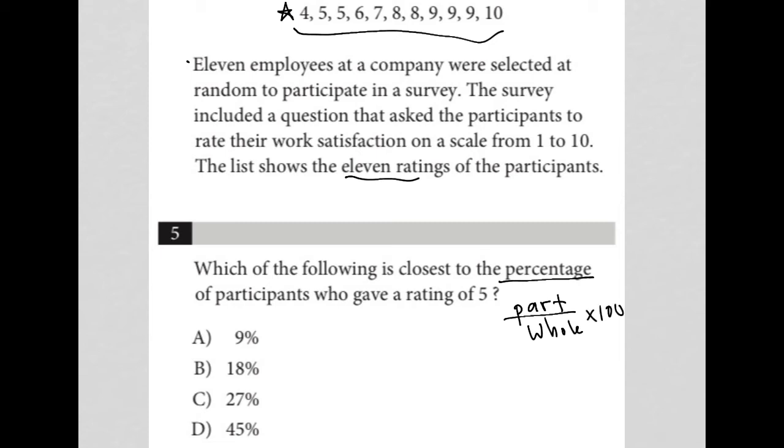What's the part of this list that we care about? It's the number of participants who gave a rating of 5. I see that here and here. So only two participants gave a rating of 5.